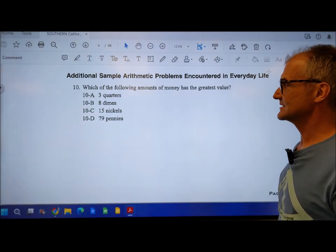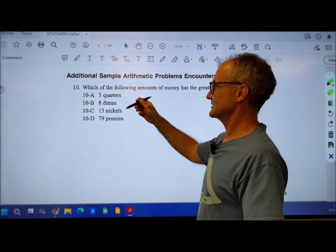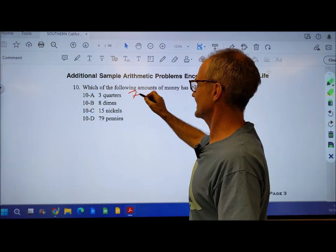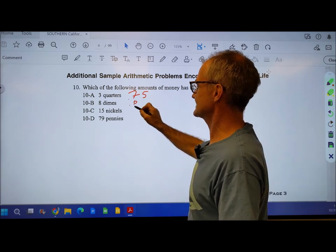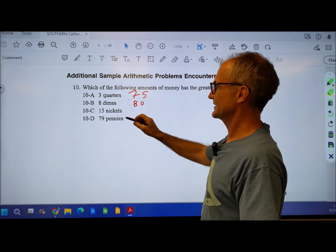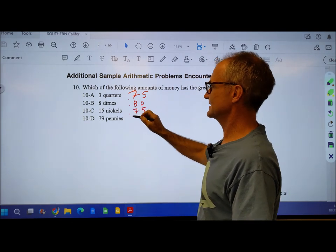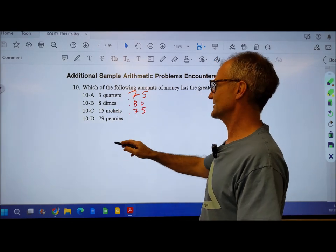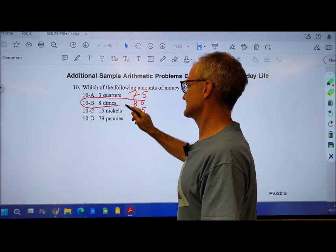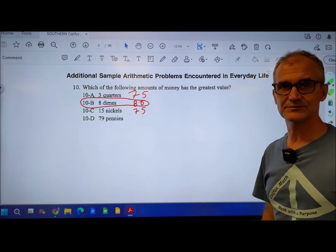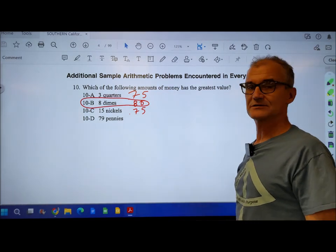Which of the following is greatest? Let's multiply these out. 3 quarters, 3 times 25 is 75 cents. 8 dimes, 8 times 10 is 80 cents. 15 nickels is 75 cents. 79 pennies. I can see 80 cents is the greatest amount, or 8 dimes is the largest. It's about getting all units the same so you can compare numbers.